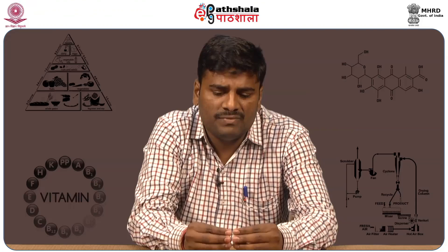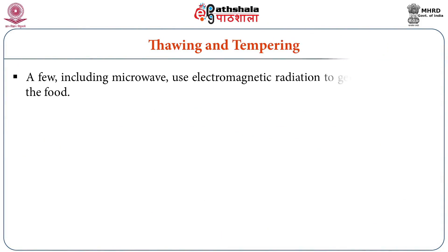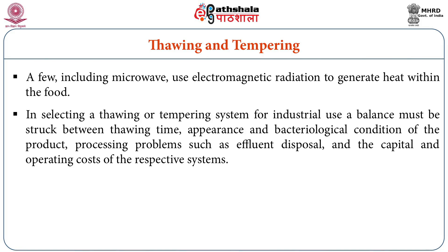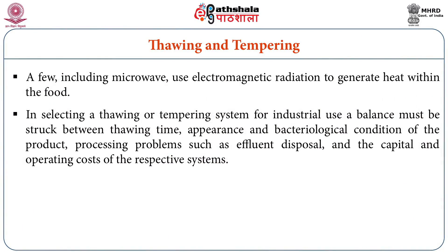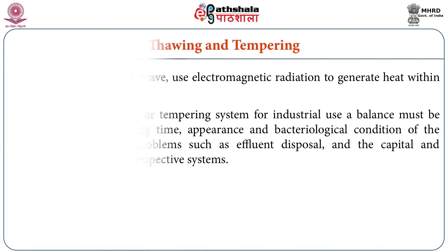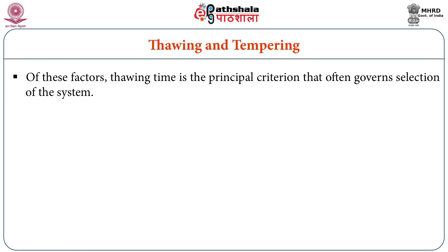In thawing, electromagnetic radiation generates heat within the food. In selecting a thawing or tempering system for industrial use, a balance must be maintained between thawing time, appearance, and bacteriological condition of the product. Processing problems such as effluent disposal and the capital and operating cost of the respective system must be considered. During thawing, water loss may occur, nutrients may be lost, and effluents may be generated. Disposal of this effluent is a problem, and bacteria may start growing. Time is an important criterion before governing thawing and tempering processes.